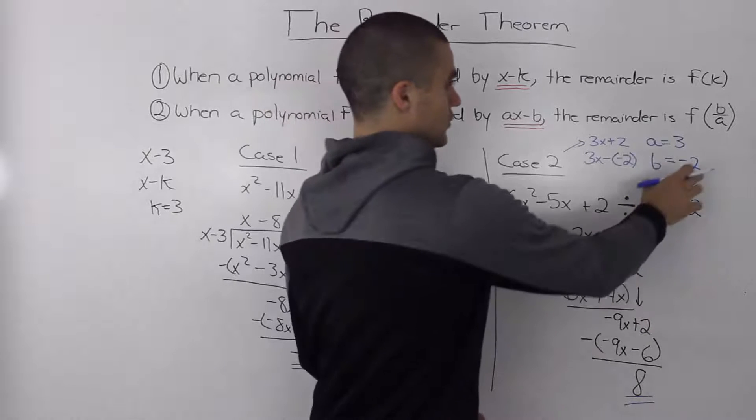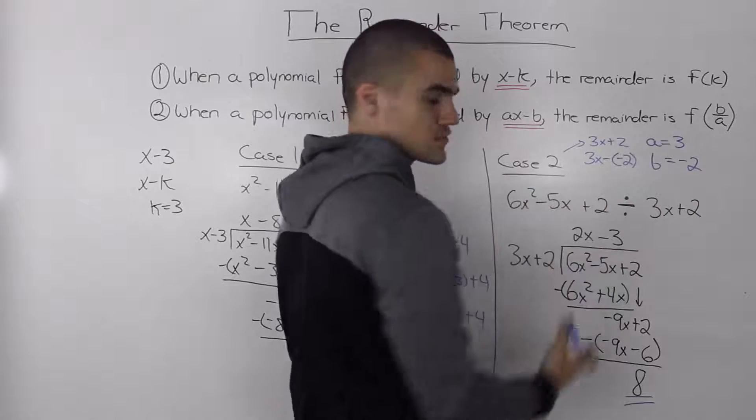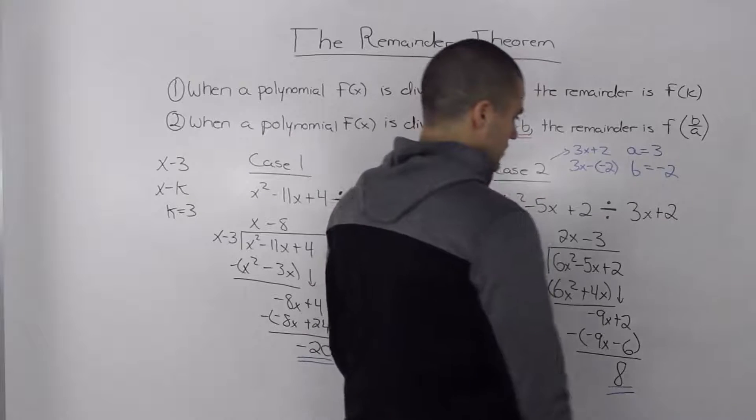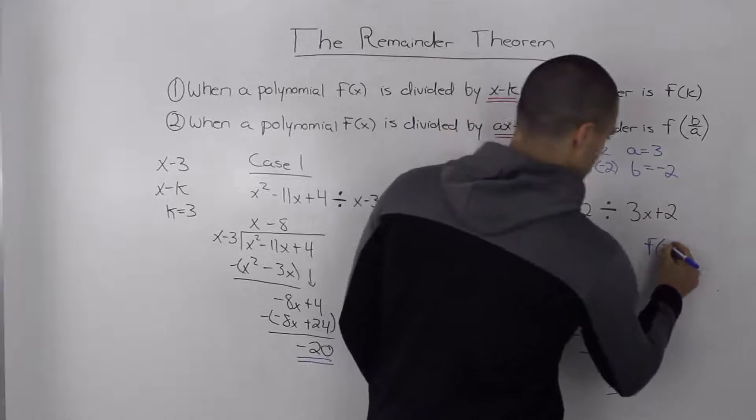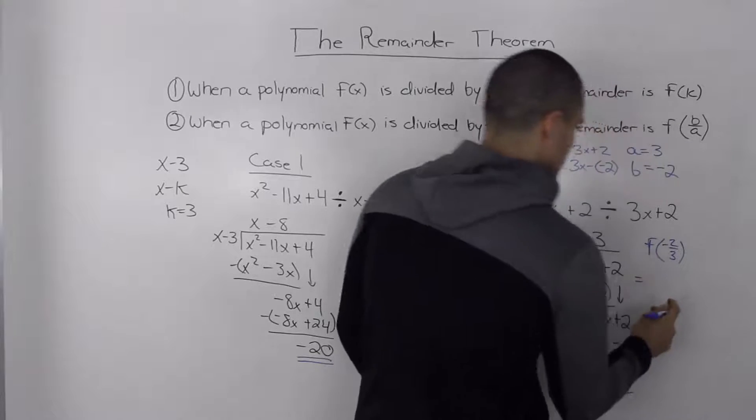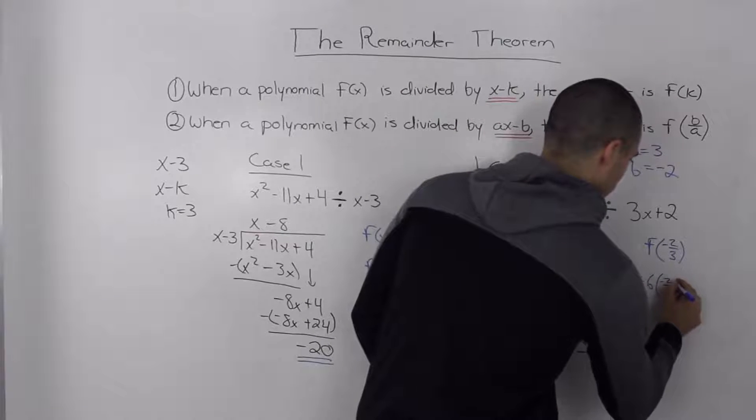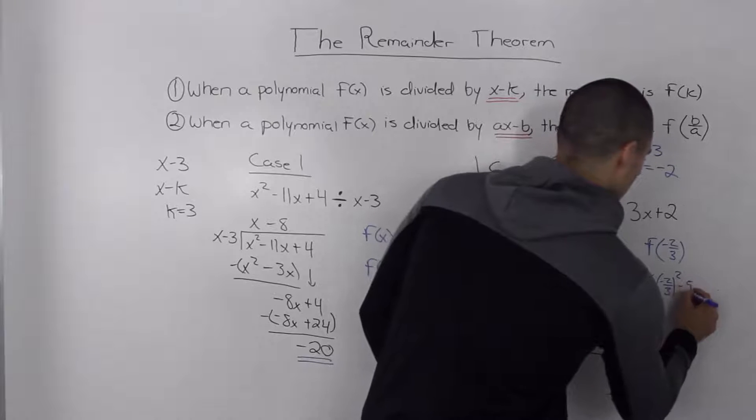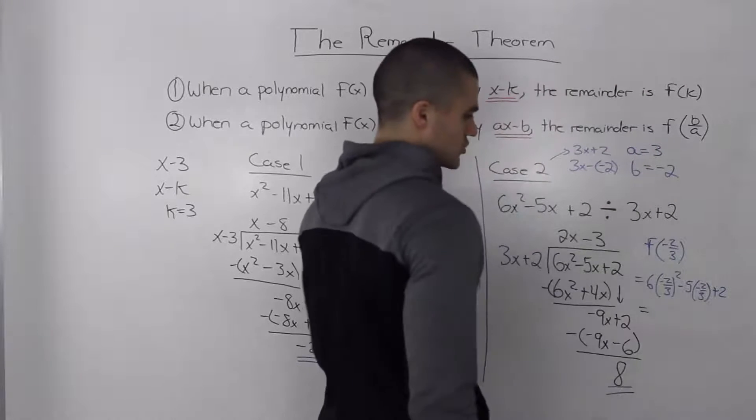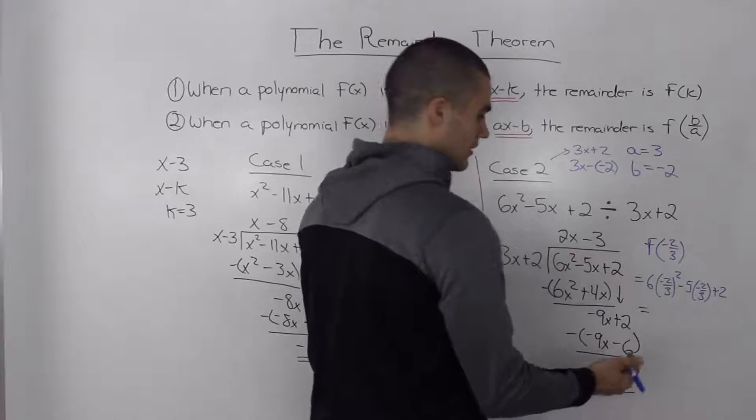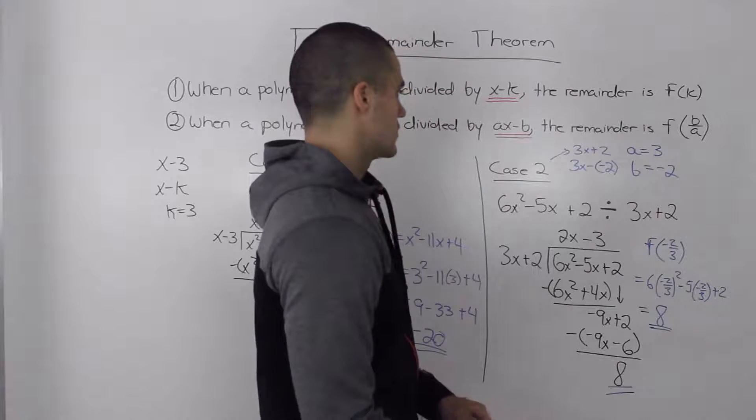So now to find the remainder, all we have to do is plug in b over a or negative 2 over 3 in our case into the x values for the dividend and we should get a value of 8. So let's find out what f of b over a is, or in our case b is negative 2, a is 3, so negative 2 over 3. Plugging negative 2 over 3 into the x values for the dividend, we get 6 times negative 2 over 3 squared minus 5 times negative 2 over 3 plus 2. I'm not going to go through all the algebra for this, but when you input this in your calculator, you should get a value of 8, which is the same remainder that we got when we did the long division.